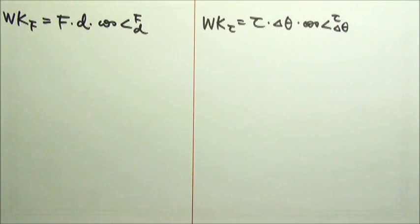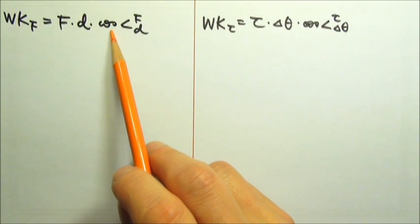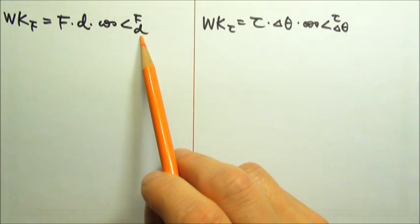After Newton's three laws of motion, we also studied work, energy, and momentum. Work done by a force equals force times displacement times cosine the angle between force and displacement.